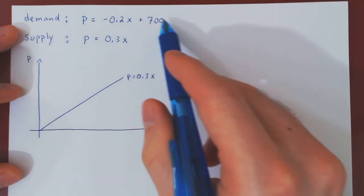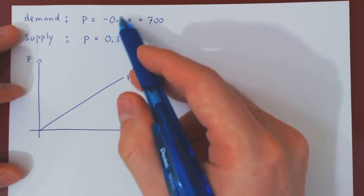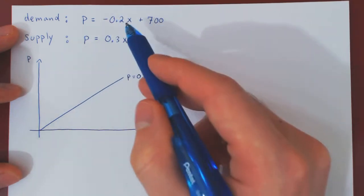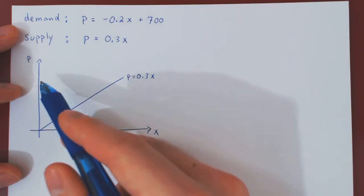The demand function is a line with negative slope with p-intercept being 700. When x is 0, p is 700.